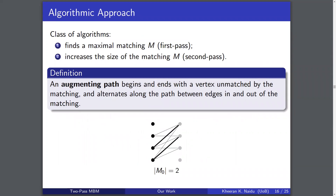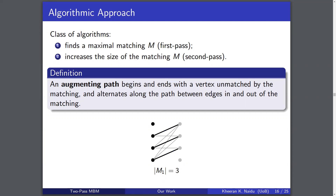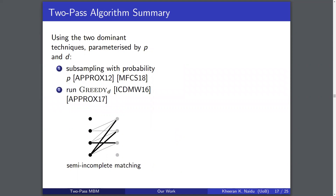Given a matching in general, an augmenting path is one which starts with an unmatched vertex, alternates between edges outside and inside the matching, and finally ends with an unmatched vertex. We can increase the size of the matching by deleting the edges of the previous matching along the path. The goal of our algorithm is to find as many disjoint augmenting paths as possible, since each one increases the size of the matching by one. We do this by combining two dominant techniques: subsampling with probability p and running the greedy-d algorithm, which computes a degree-d bounded semi-incomplete matching, allowing degree 1 on one side and up to degree d on the other side of the bipartition.